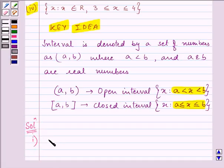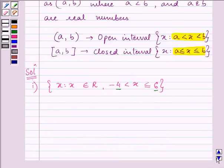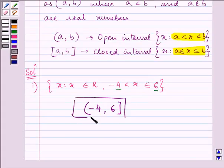So the first part is X belongs to R where X is greater than minus 4 but less than equal to 6. Now here the interval is from minus 4 to 6 where 6 is included but minus 4 is excluded. Thus this is open from one side and closed from the other side. So interval will be written as minus 4, 6 and it is closed from the other side. So this becomes the answer of our first part.